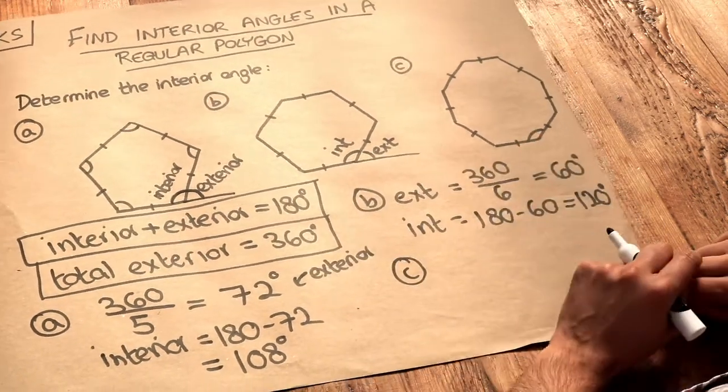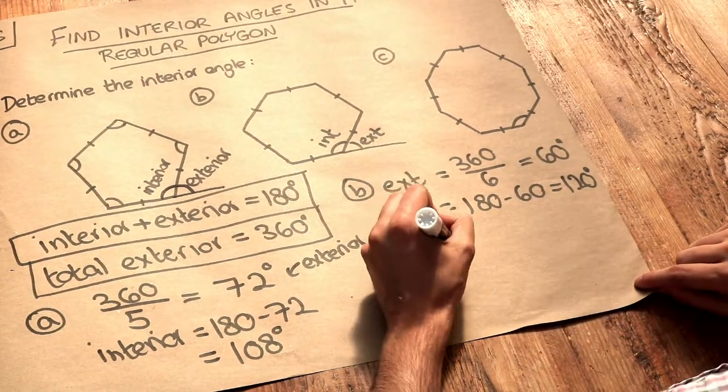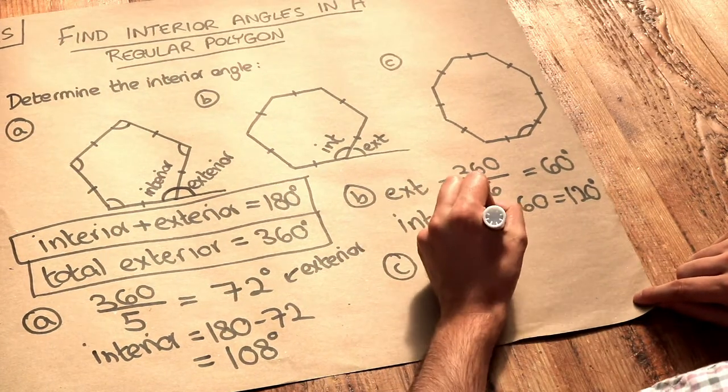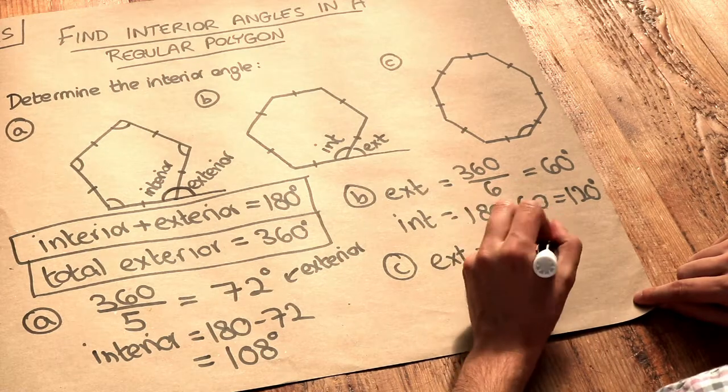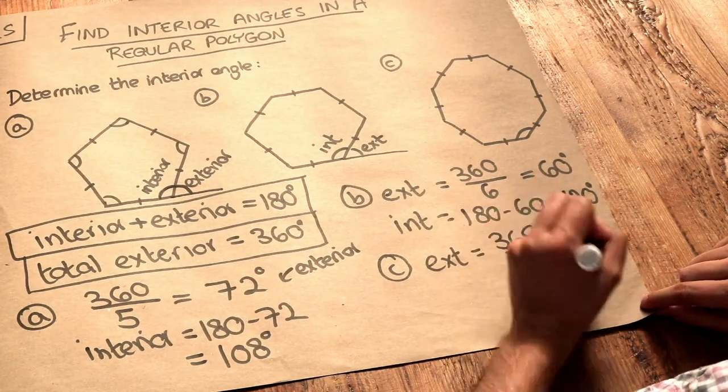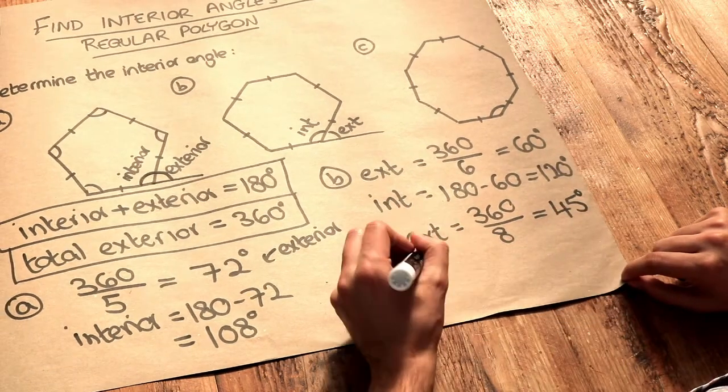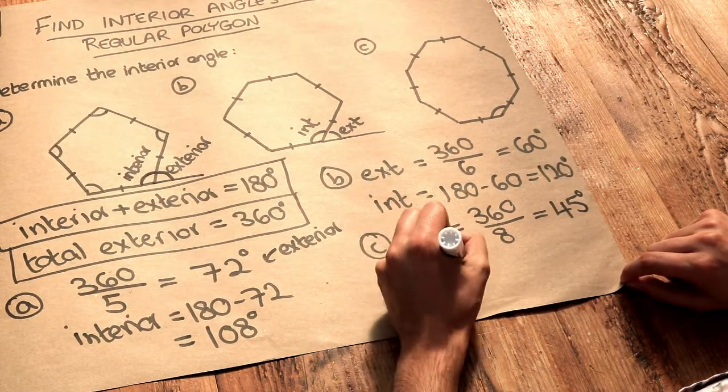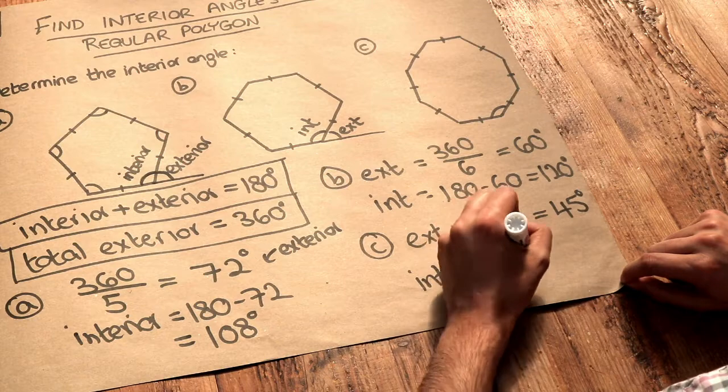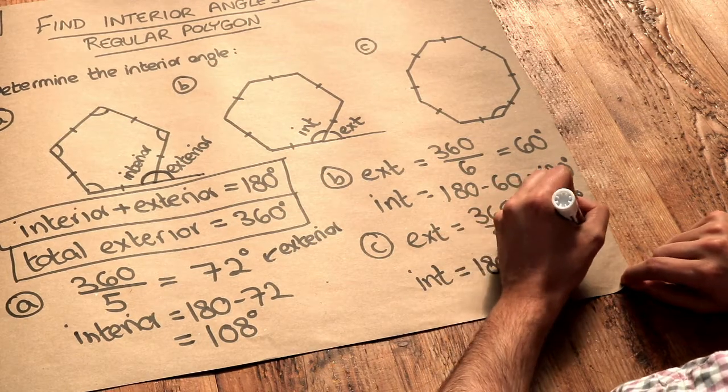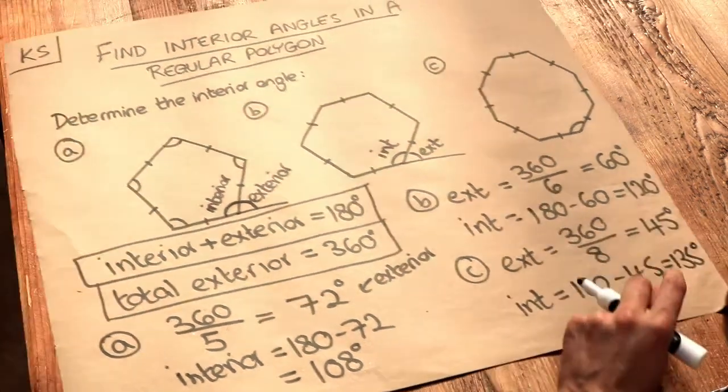And finally C—this is an octagon. The exterior angle first: we do 360 divided by the number of sides, 8, and that is equal to 45 degrees. Then again we just take that away from 180 to get the interior angle. So 180 minus 45 is equal to 135 degrees.